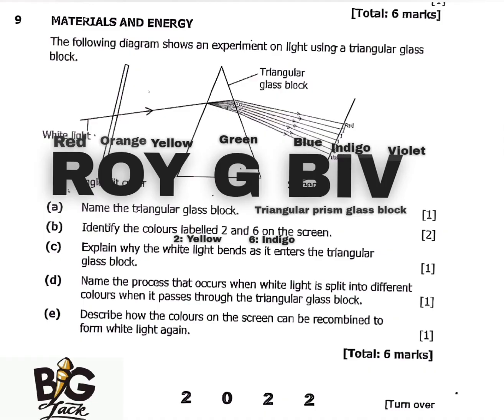Question C says: explain why the white light bends as it enters the triangular glass block. The answer is because of refraction — refraction is the bending of light after passing through a medium. So the answer is: because of refraction.